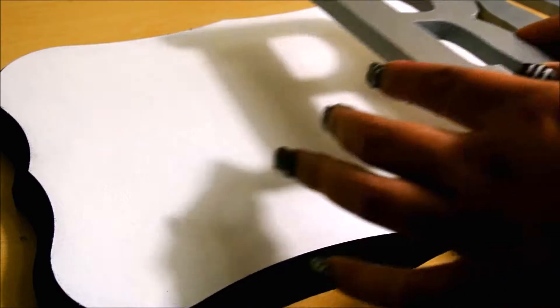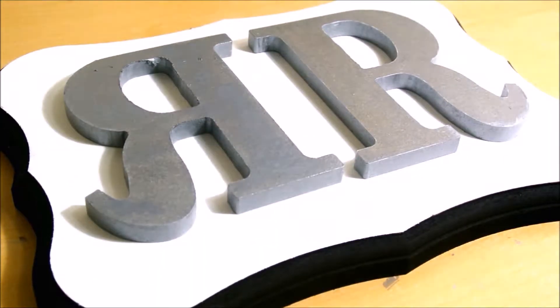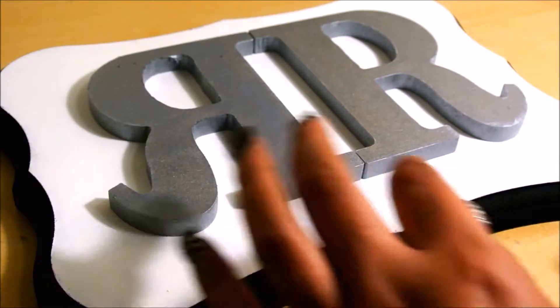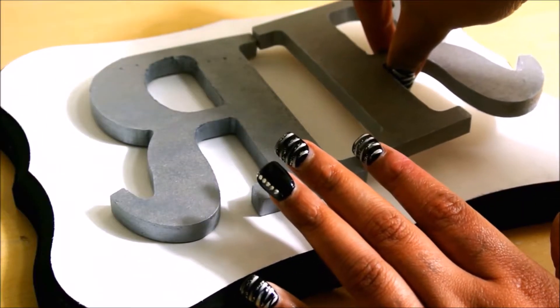Then I went ahead and placed the letters in the center of the plaque so I could see what position I would like them to be. Once I had that position that I want, I used a hot glue gun to secure them in place.